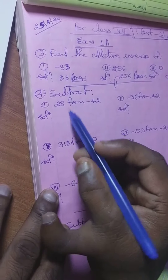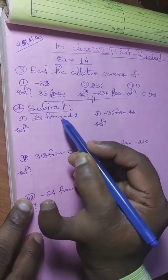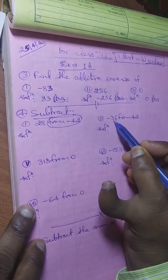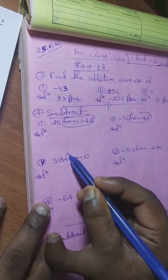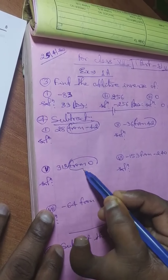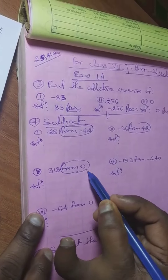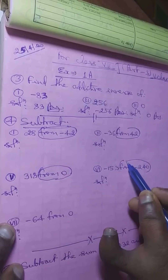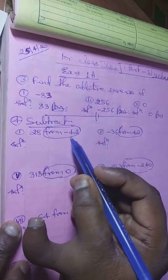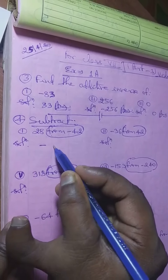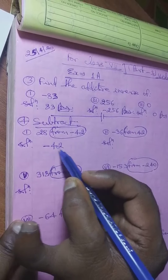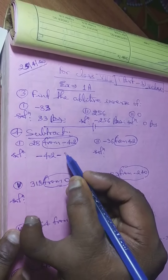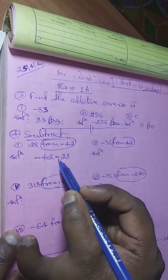Fourth question: subtract 28 from minus 42. The sign of subtraction is minus, and before 28 there is no sign, meaning it is positive. Then positive into negative gives a negative sign.